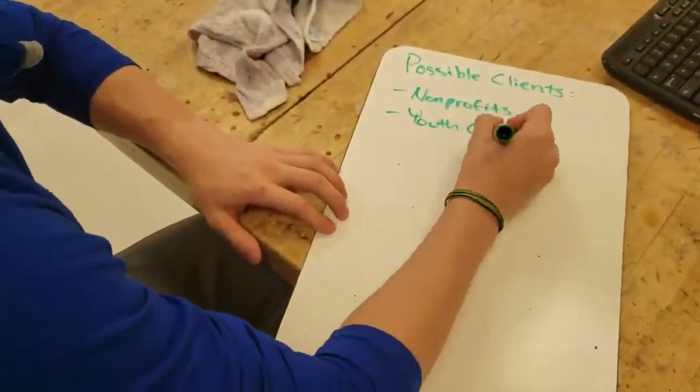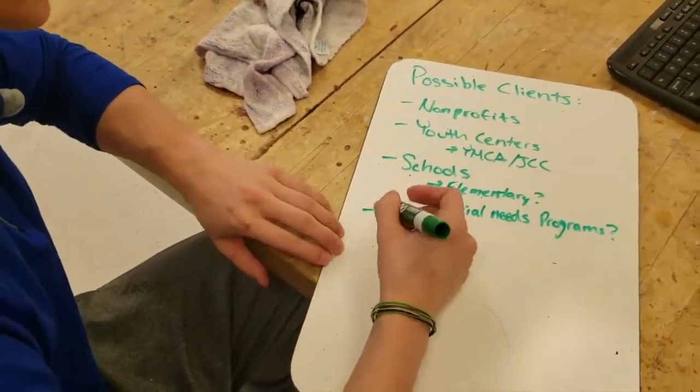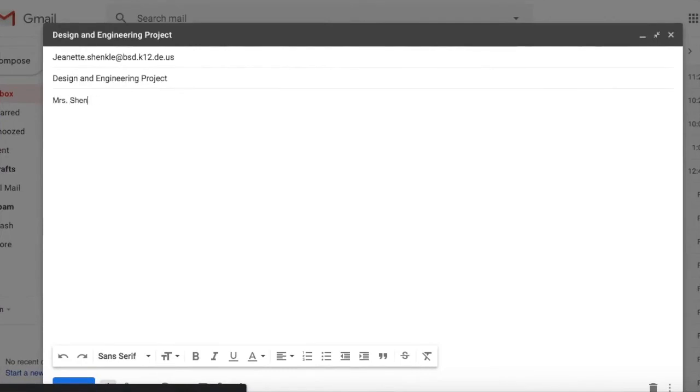In early September, our class brainstormed ways in which we could solve problems in our local community. We reached out to local nonprofits, schools, and community members searching for ways in which we could use our engineering skills to make a difference in the lives of others.